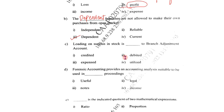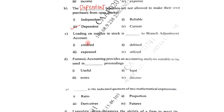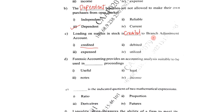Next, question number 3: Loading on surplus in stock is dash to branch adjustment account. Options are credited, debited, expended, or utilized. The correct answer is credited. Loading on surplus in stock is credited to branch adjustment account.